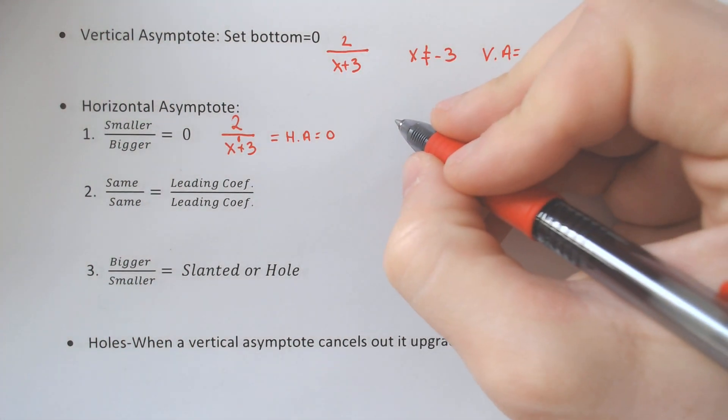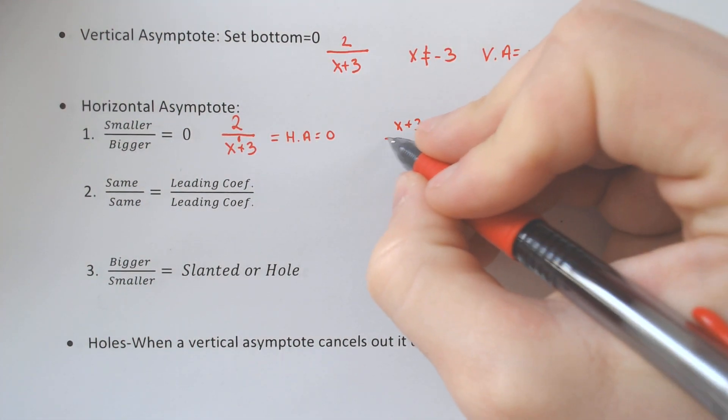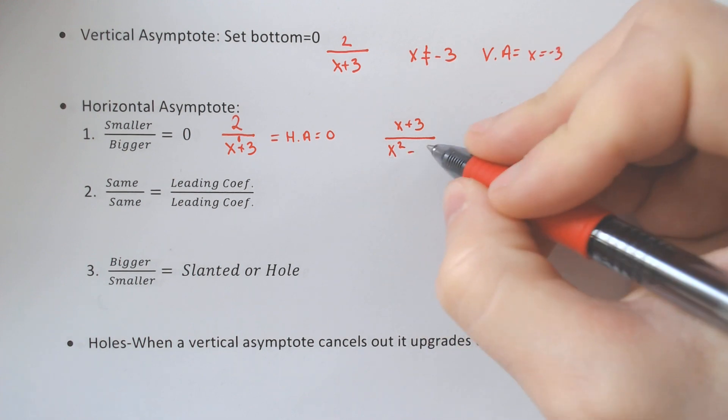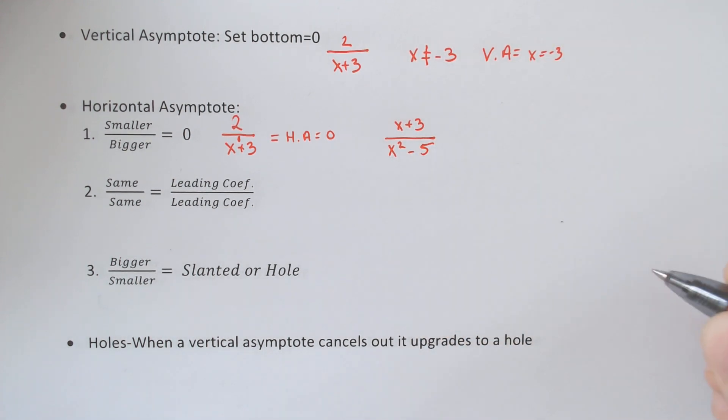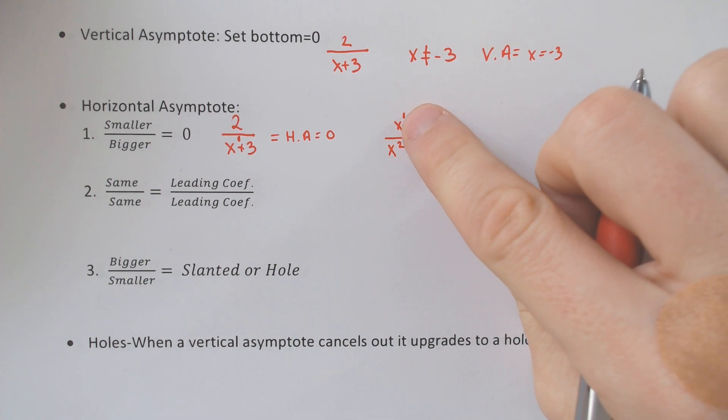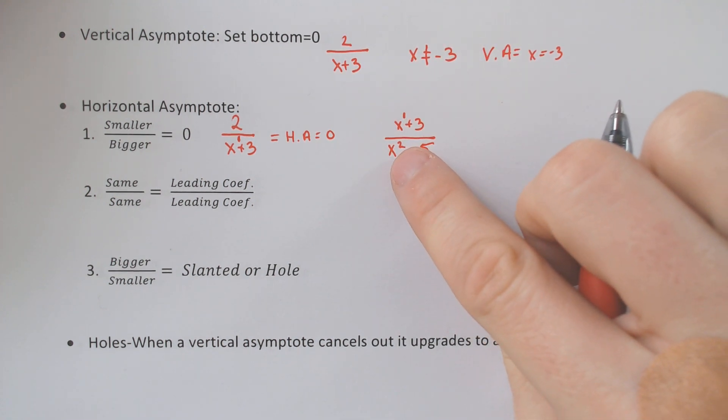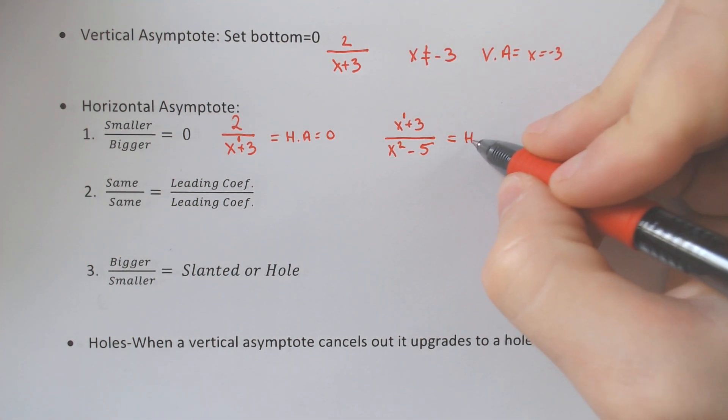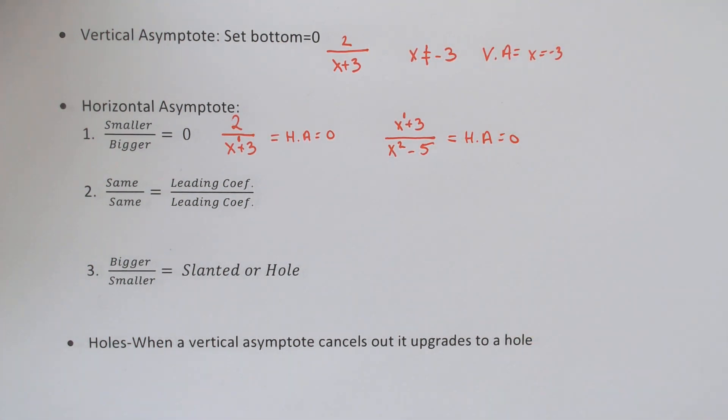Another example of this would be if we had something like x plus 3 over x squared minus 5, you have a smaller exponent, x to the 1st on the top of the fraction, and a bigger exponent, x squared on the bottom of the fraction, this would also have a horizontal asymptote of 0, okay?